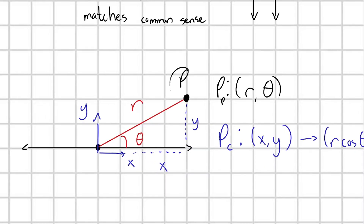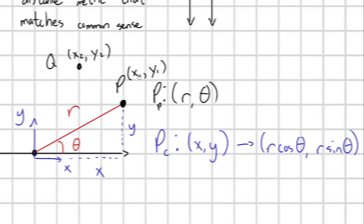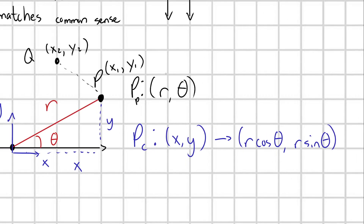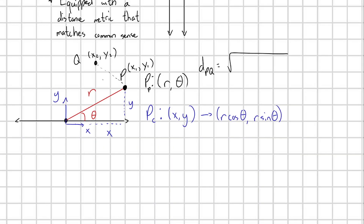So now I'm going to have point P and let's throw in another point Q. Let's say P is at x1, y1 and Q is at x2, y2. What would the distance be in Cartesian coordinates between these two points? We would just use the Pythagorean theorem. So the distance D between P and Q is simply equal to the square root of (x2 - x1) squared plus (y2 - y1) squared. Distance was really easy to formulate in Cartesian coordinates.